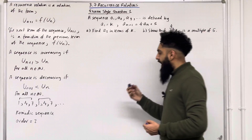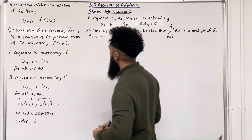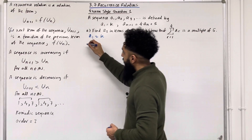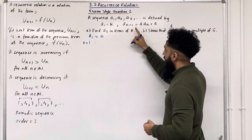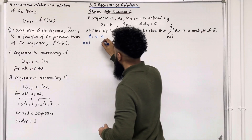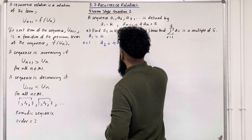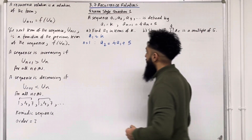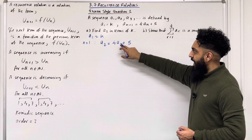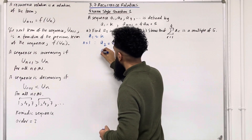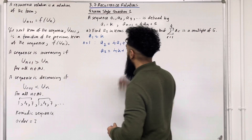We know that a1 = k. We can substitute n = 1 into the recurrence relation to work out a2. So we've got a2 = 4a1 + 5. Since a1 = k, we substitute that in, giving a2 = 4k + 5.